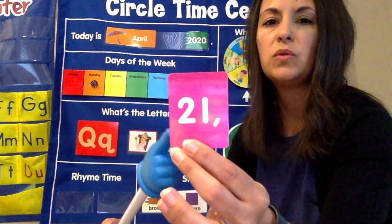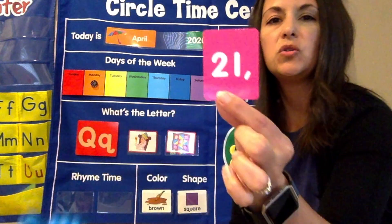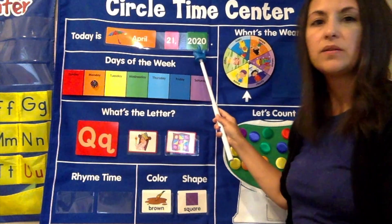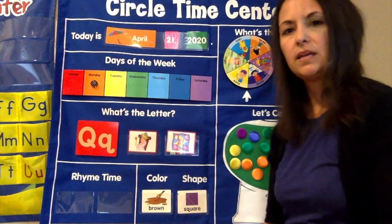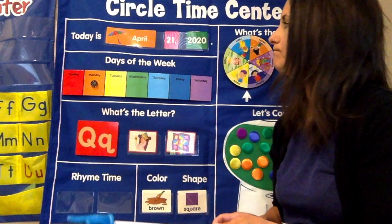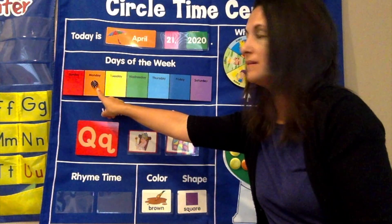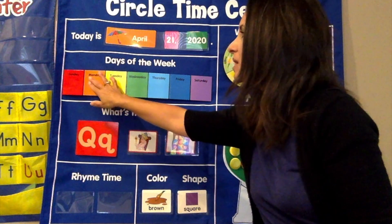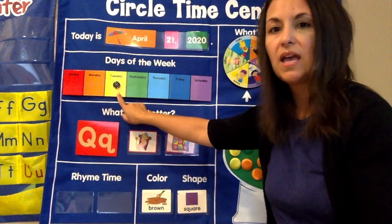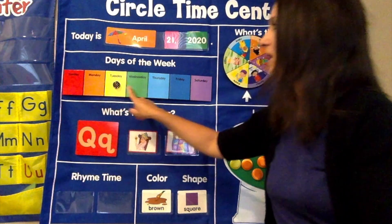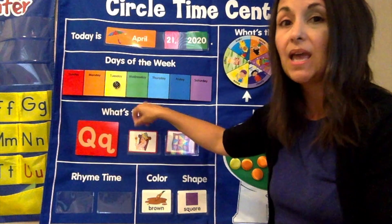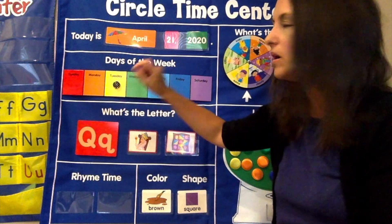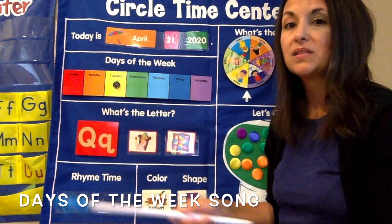Can you see that? It's a two and a one. Two and a one makes 21. So it is April 21st, 2020. Can we figure out what day it is? Yesterday was Monday and tomorrow is Wednesday, so we're going to move this right there to our yellow rectangle. Monday was yesterday, tomorrow is Wednesday — that means today is Tuesday. If you said Tuesday, you're so smart. We will sing our days of the week song to make sure you were right.